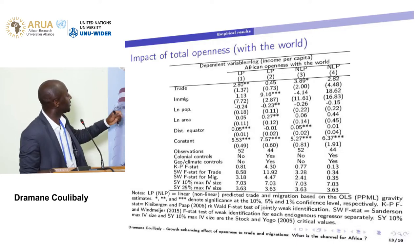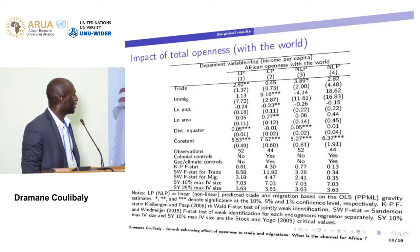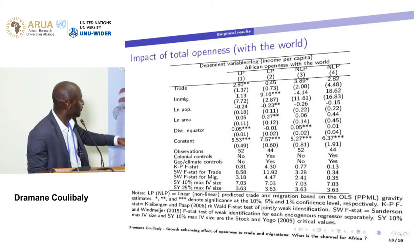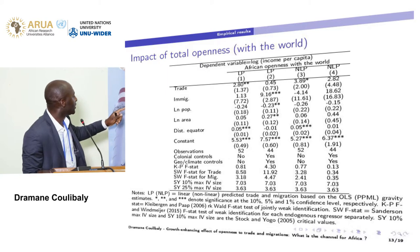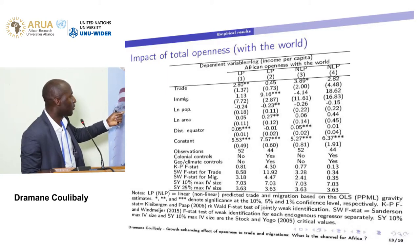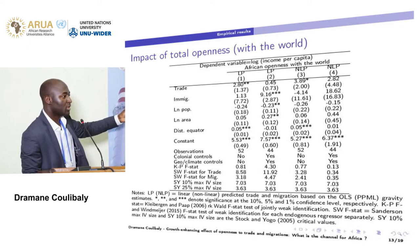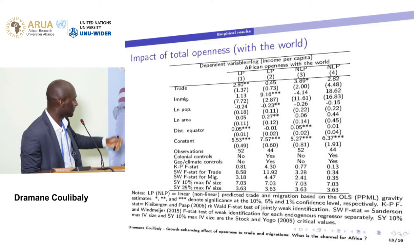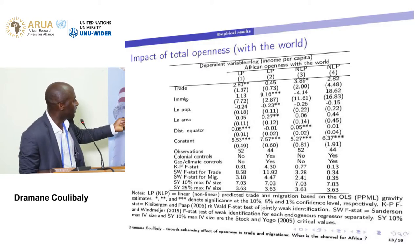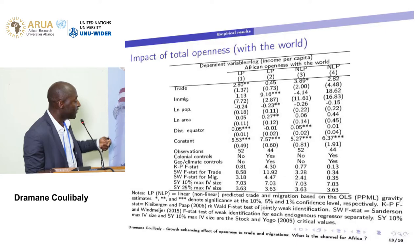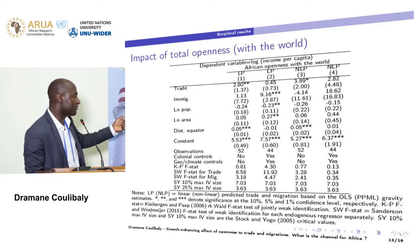These are the results for the baseline case — the impact of total openness with the world. Using the linear production instrument with a narrow set of controls, trade has a significant impact on income. Using the non-linear production instrument with a narrow set of controls, trade is significant, but with the extensive set of controls, neither trade nor migration is significant. So for Africa, we do not find a significant impact of immigration on income as found by Ortega and Peri.